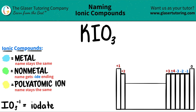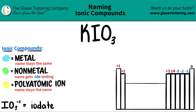Today we are going to be naming the ionic compound KIO₃. Here's a little trick: if you see that you have three or more different elements in your compound, you know that you're dealing with at least one polyatomic ion.